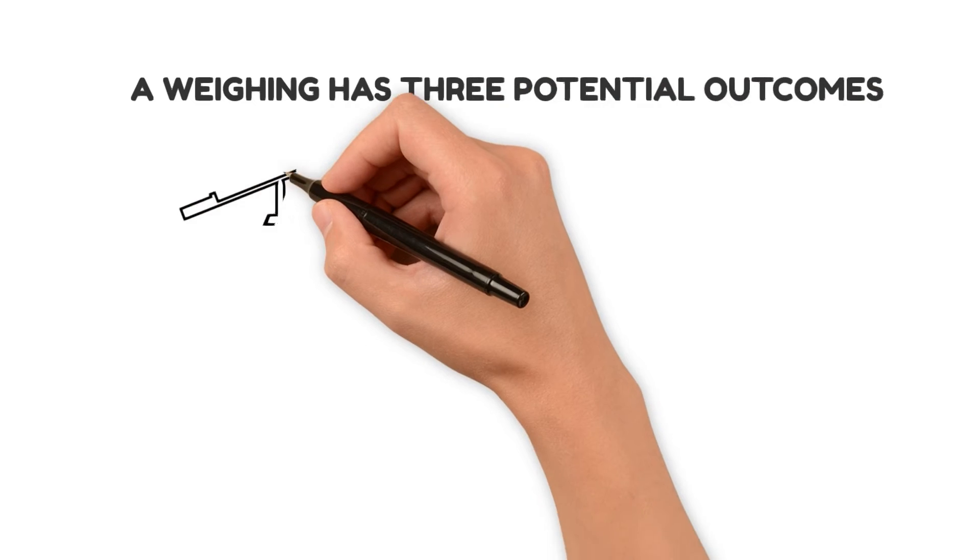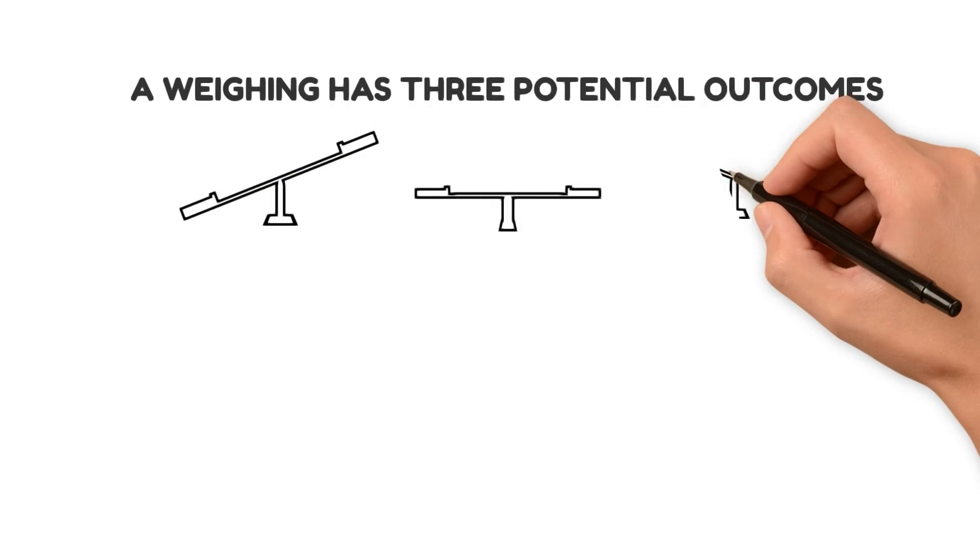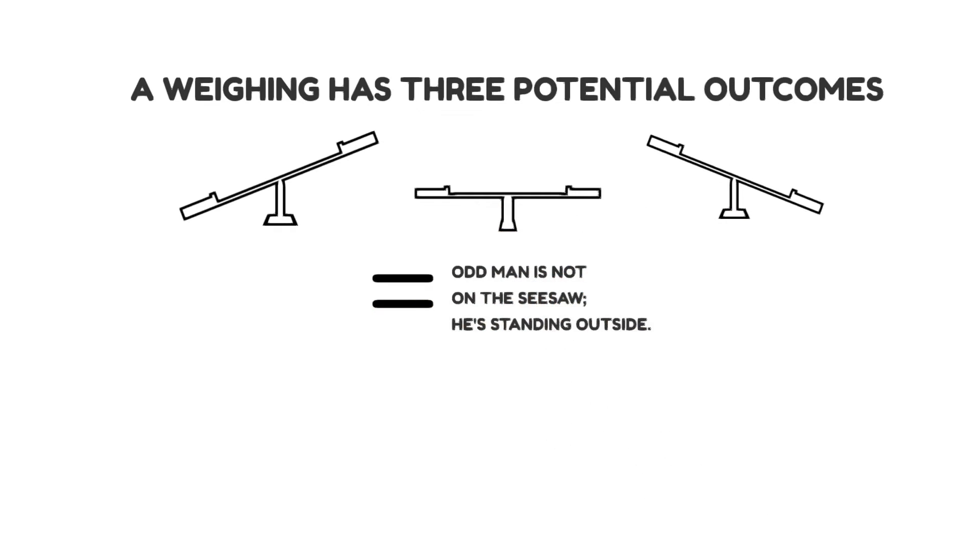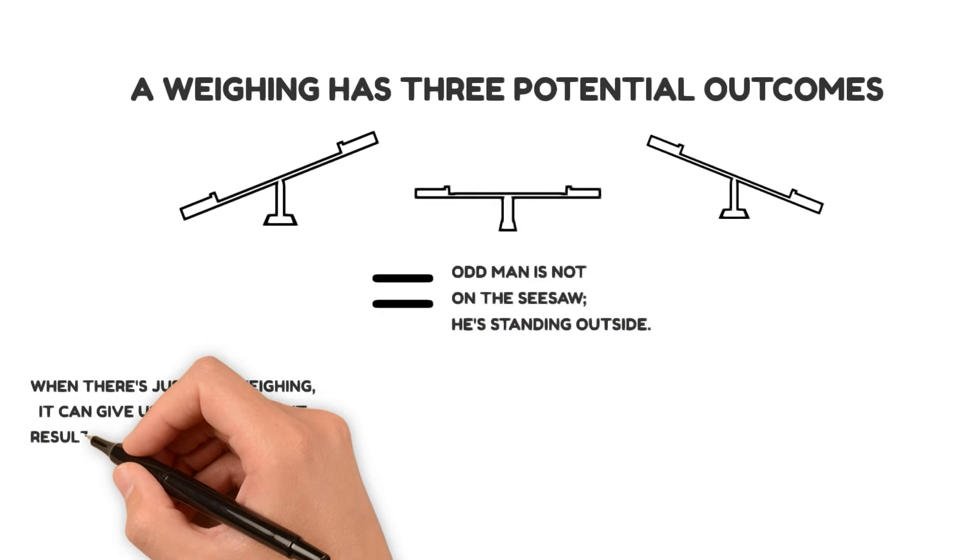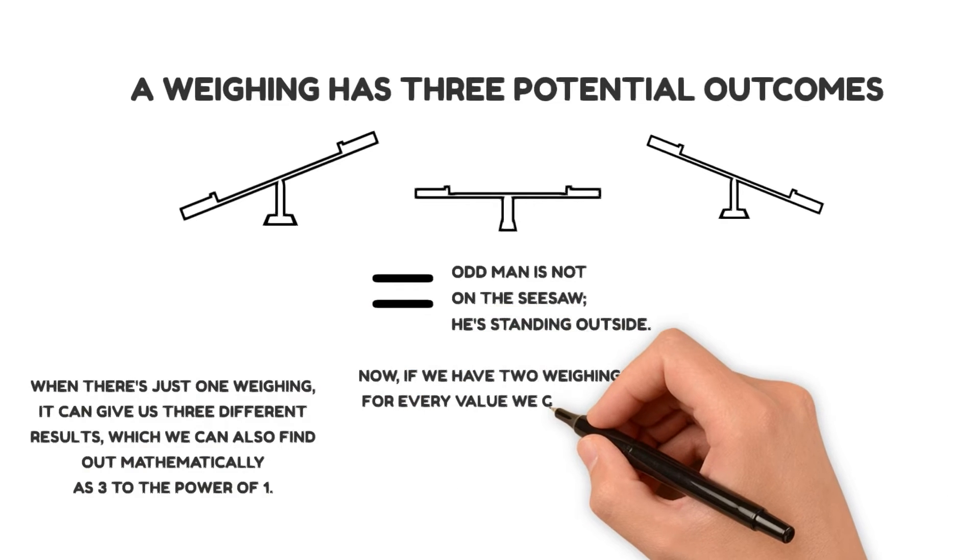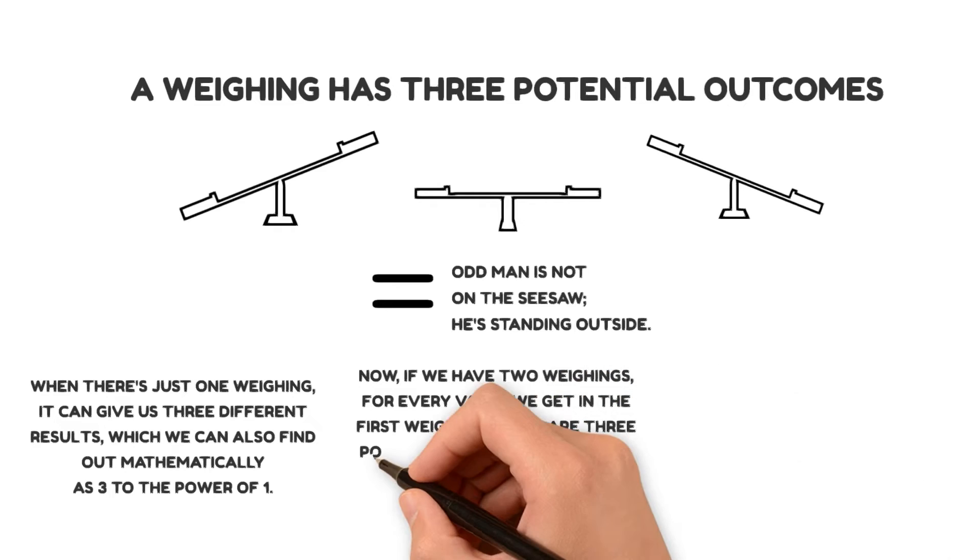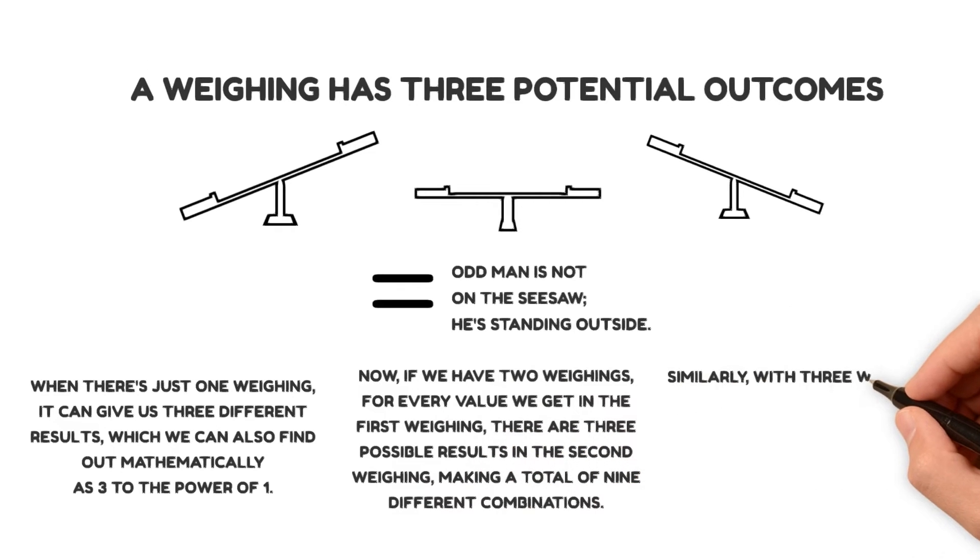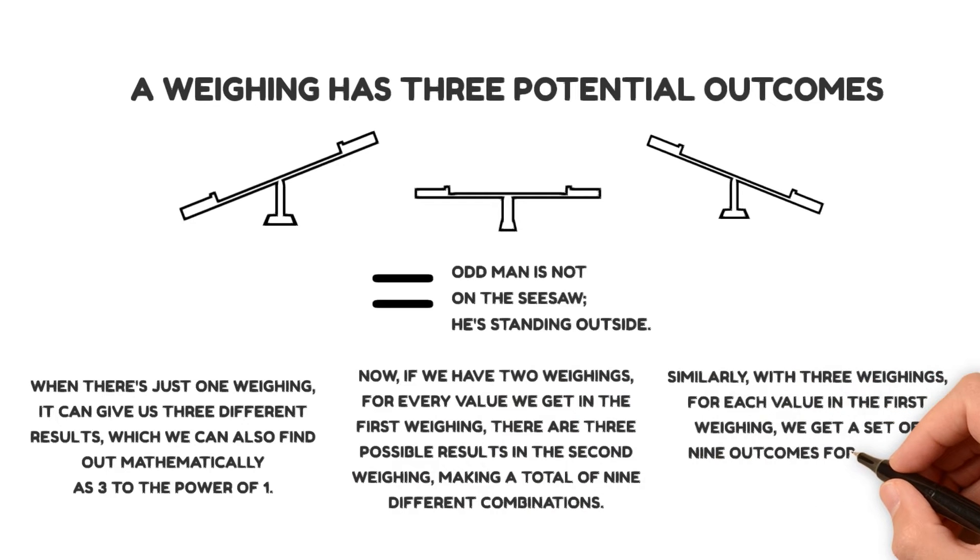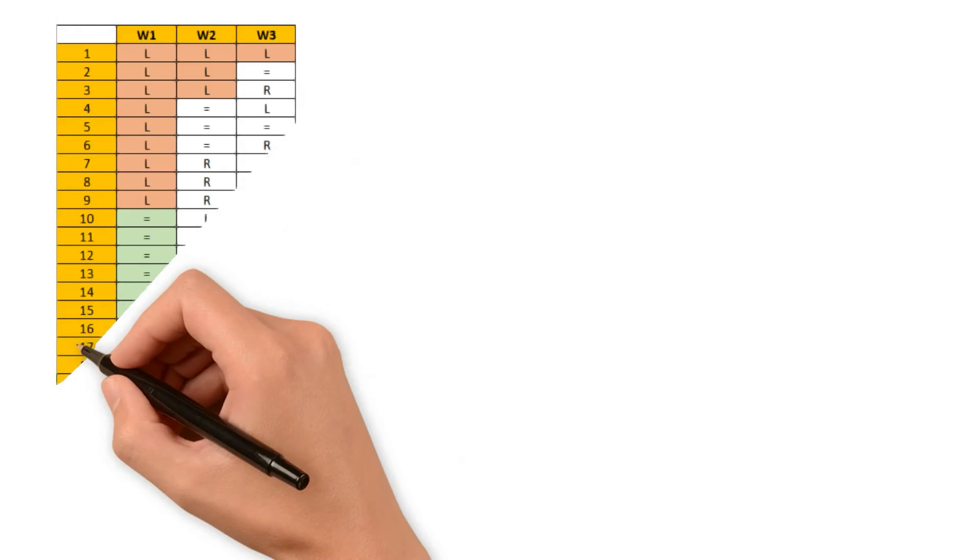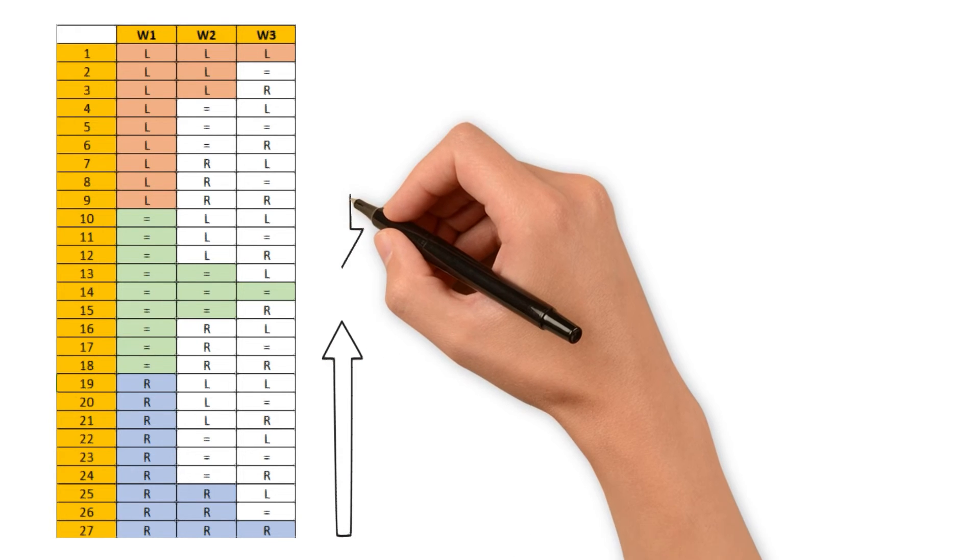Let's now logically understand how we arrive at this solution. A weighing has three potential outcomes. It can shift to the left, stay in the middle or balanced, or shift to the right. The balanced or equal sign indicates the odd man is not on the seesaw. He is standing outside. Now, let's delve into how we constructed the table. When there's just one weighing, it can give us three different results, which we can also find out mathematically as 3 to the power of 1. Now, if we have two weighings, for every value we get in the first weighing, there are three possible results in the second weighing, making a total of nine different combinations. Similarly, with three weighings, for each value in the first weighing, we get a set of nine outcomes for all the next weighings, giving us a total of 27 combinations. Take a look at the neat pattern in the table. The lower half is precisely opposite or the inverse of the upper half.